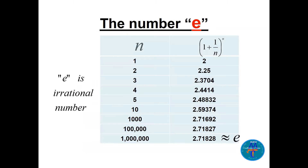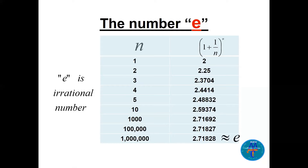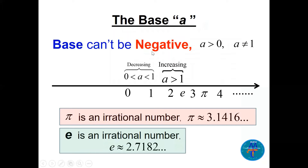The number e is an irrational number — it's 2.71828... A simple idea of where we get e: if we have the expression (1 + 1/n)^n and we plug in positive integers — if n is 1, 2, 3, 5, 10, 1000, 1 million — as we increase the value of n, we reach the value of e, which is 2.71828 etc.